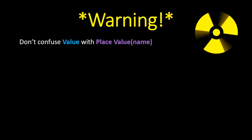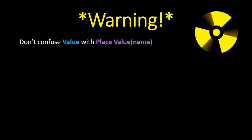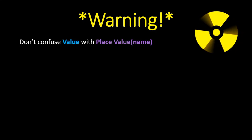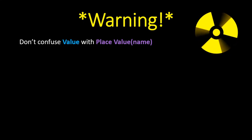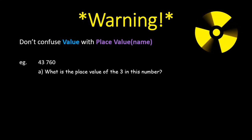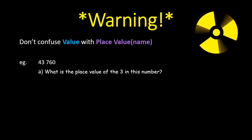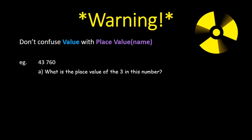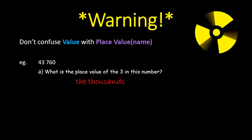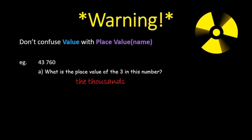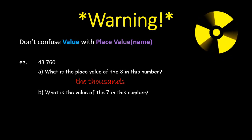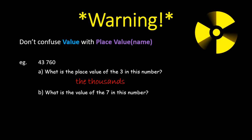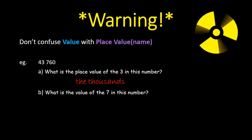Warning — a big mistake made all the time on tests and official exams: do not confuse values with place values. Place value is the name of the position — the place of that digit — while the value is how much it is worth. For example, in the number 43,760: the place value of the three is the thousands position. That's its place value — the name of where it is. The value of the seven: it is not worth seven — it's in the hundreds position, so it's worth 700.